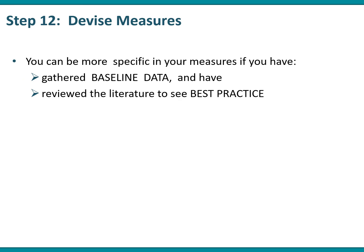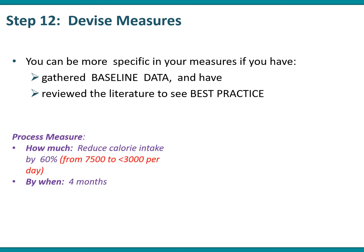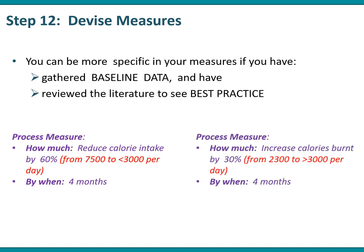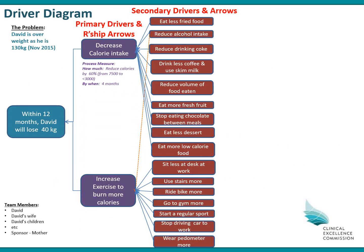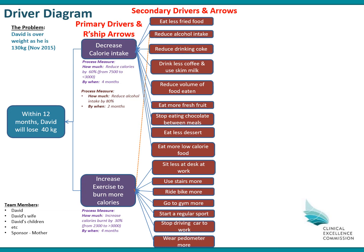You can be a lot more specific in your measures if you've got some baseline data and know what best practice is. With David, he could say he wants to reduce his calorie intake from 7,500 to less than 3,000 a day, and increase his calories burnt from 2,300 to over 3,000 a day. You'd put these process measures into the second column of your driver diagram. Another process measure might be reducing his alcohol intake by 80% within two months, though that can be changed if the team thinks it's too hard or too easy.